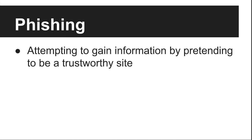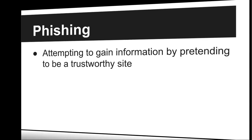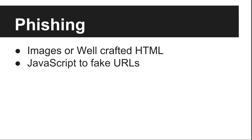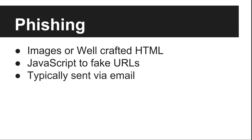Phishing is an attempt to gain information by pretending to be a trustworthy website or email. Images or well-crafted HTML are used in an email to convince you that it's from, say, Bank of America, and then it'll say your password is out of date — please enter your old one. They use JavaScript to fake URLs. They will typically send stuff by email, so if you ever get an email that says your account has been hacked and to go change it, be wary.